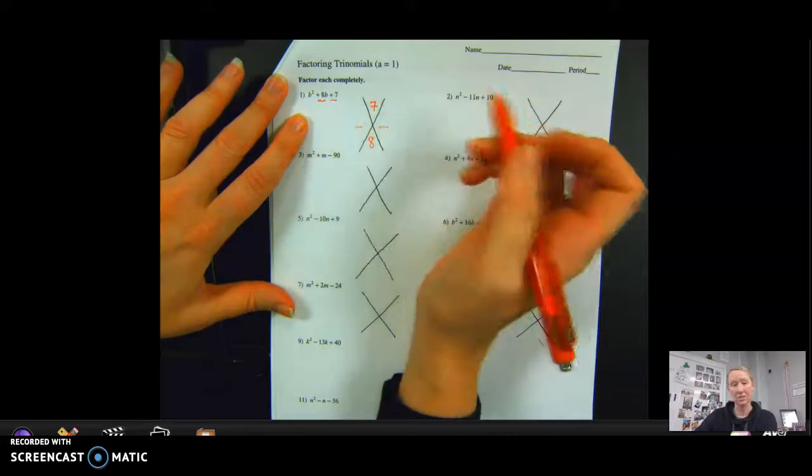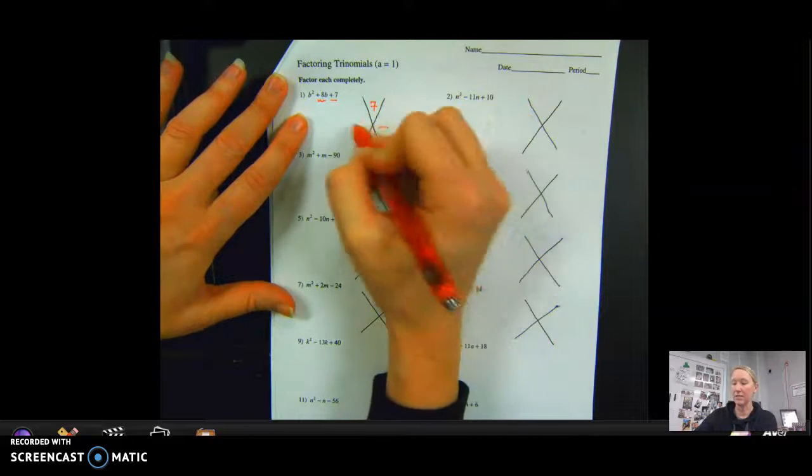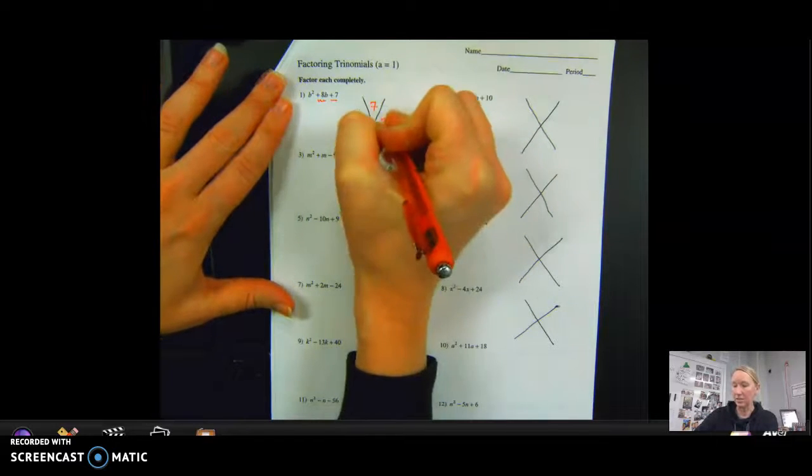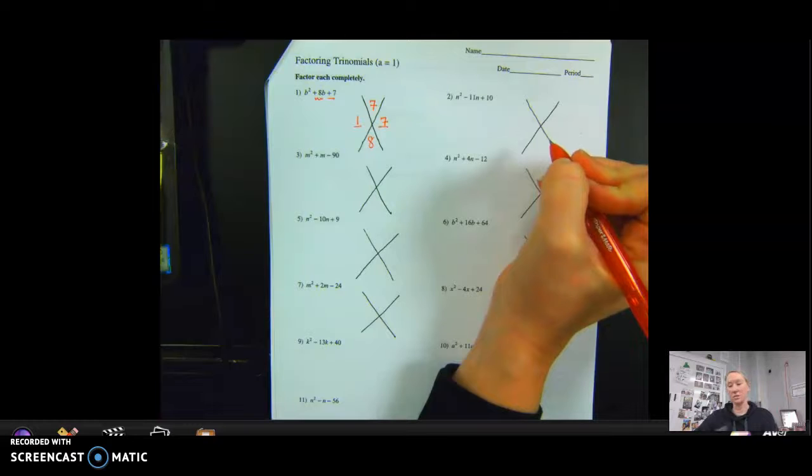to equal 7. So 7 is prime, so this is a lot easier, so the only factor pair of 7 would be 1 and 7. And nicely, 1 plus 7 does equal 8, so this would be 1, this would be 7.